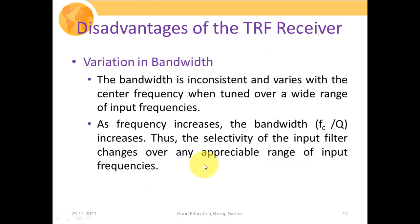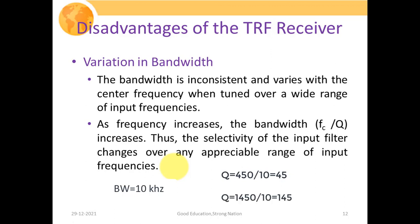The selectivity of the input filter changes over any appreciable range of input frequencies. For example, if the AM bandwidth is fixed at 10 kHz and the operating frequency is 450 kHz, the required quality factor Q = 450/10 = 45. But if the operating frequency increases to 1450 kHz, then Q = 1450/10 = 145, which is very difficult to realize. Hence, it is very difficult to design a TRF receiver at very high frequencies of operation.